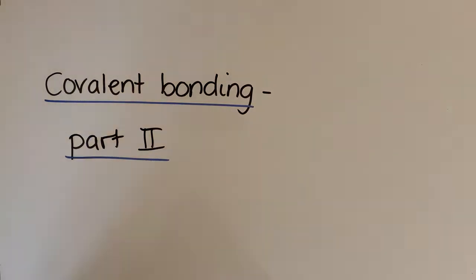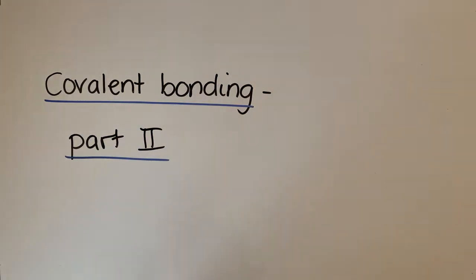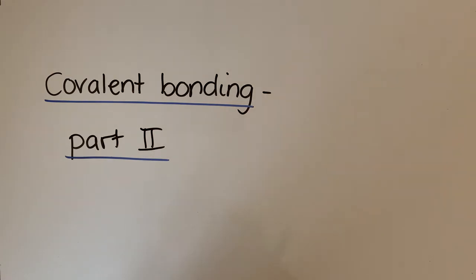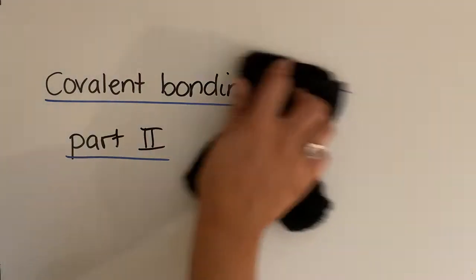We're now going to have a look at some more covalent molecules — the ones we've looked at so far, like water, methane, and ammonia. In all of them, the atoms try to achieve a full outer shell of electrons. But there are some exceptions to that, and we're going to have a look at some of those exceptions here.